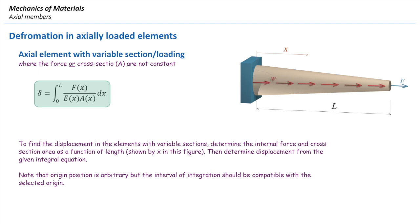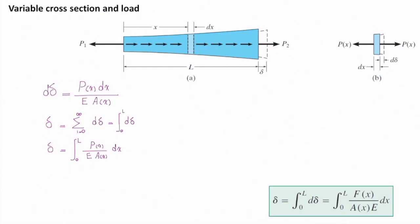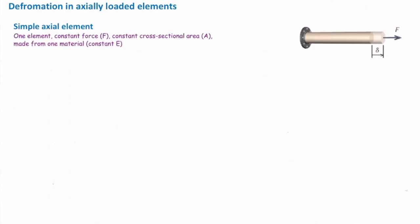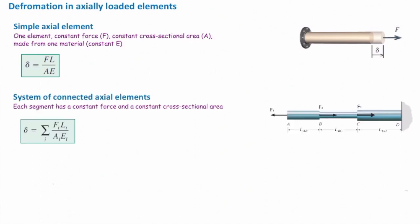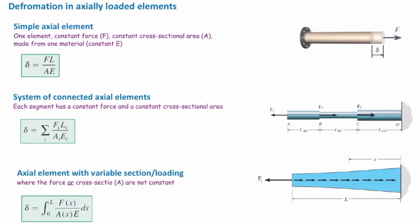Let me summarize what we have learned. For a simple axial element, deformation is FL/EA. For a system of rods connected together, we add the deformation in each rod. For a rod with variable section or variable loading, we use the integral form. Depending on the case, we use one of these three equations — they are equivalent to each other, with the simplest being FL/EA and the most general being the integral form.